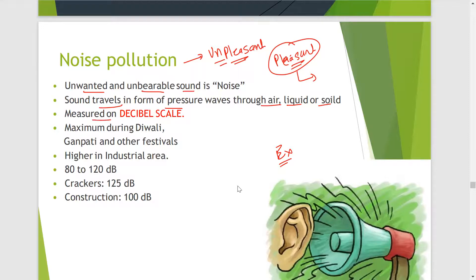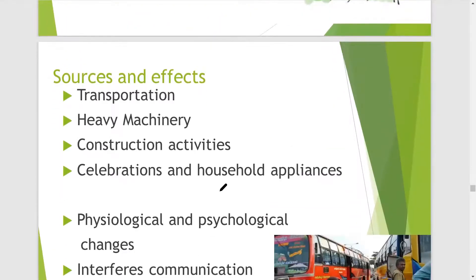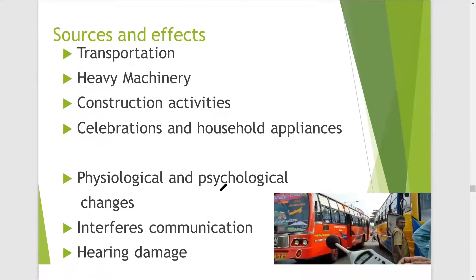The measuring unit of sound is decibel. Noise is maximum during Diwali, Ganpati, and other festivals. It is higher in industrial areas, ranging from 80 to 120 decibel. Crackers can produce noise up to 125 decibel, and at construction sites it can reach up to 100 decibel.